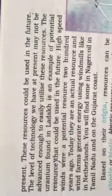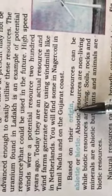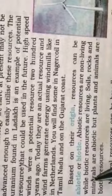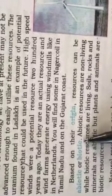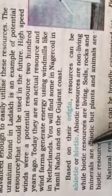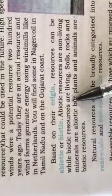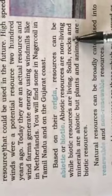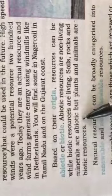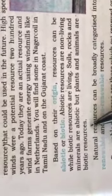On the basis of origin, natural resources can be classified as abiotic and biotic. Abiotic resources are non-living things, while biotic resources are living things. Soil, rock, and minerals are abiotic resources, while plants and animals are biotic resources.